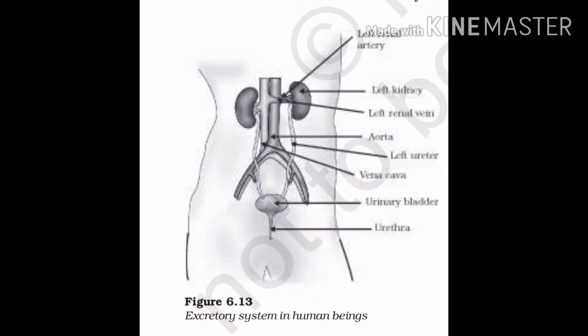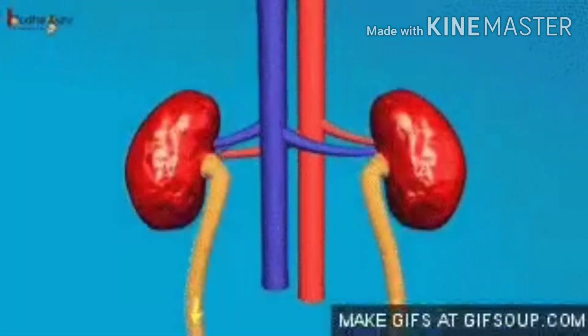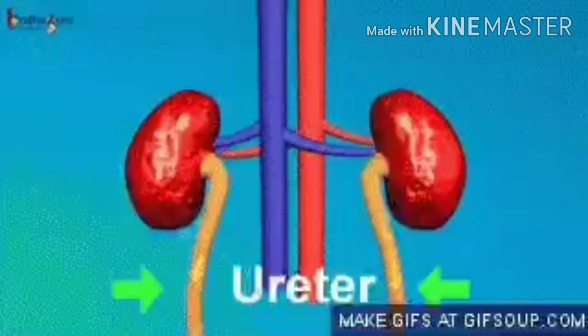The excretory system in human beings includes a pair of kidneys, a pair of ureters, a urinary bladder and a urethra. Kidneys are located in the abdomen, one on either side of the backbone. Urine produced in the kidneys passes through the ureters into the urinary bladder where it is stored until it is released through the urethra. The question is: how is urine produced?